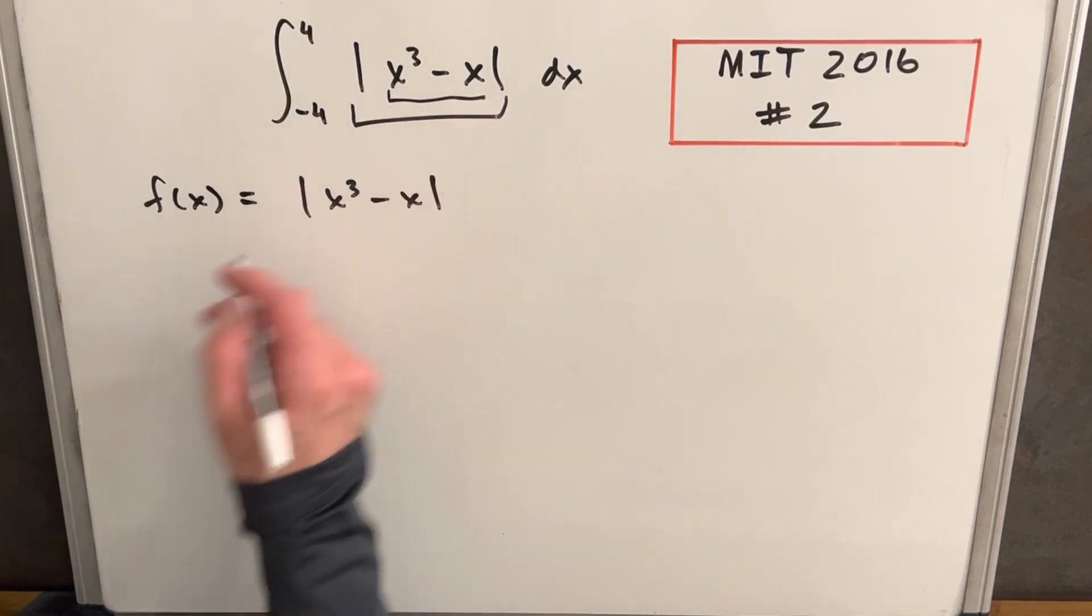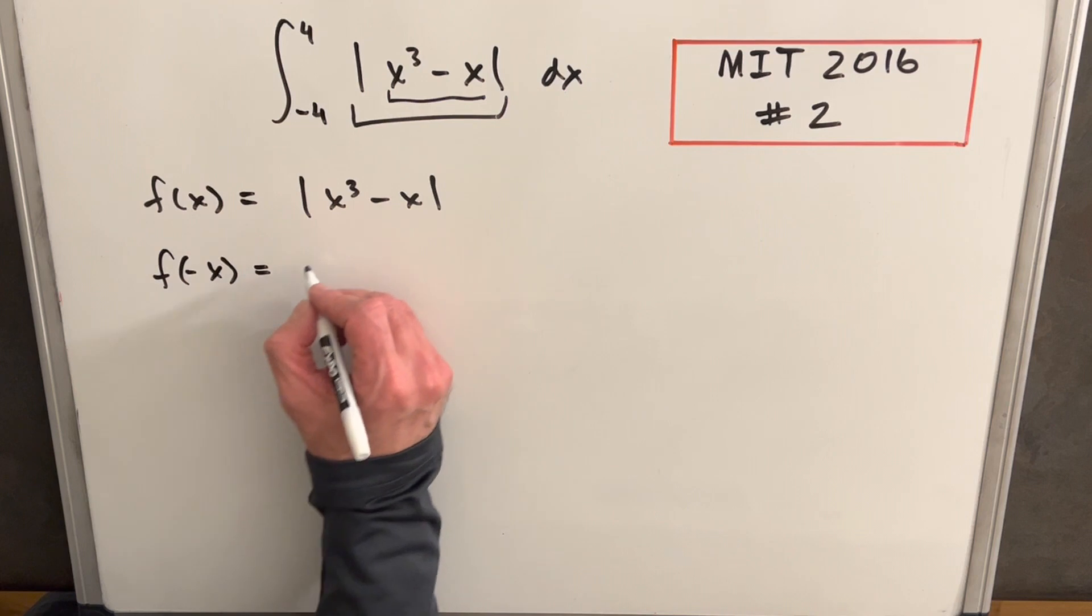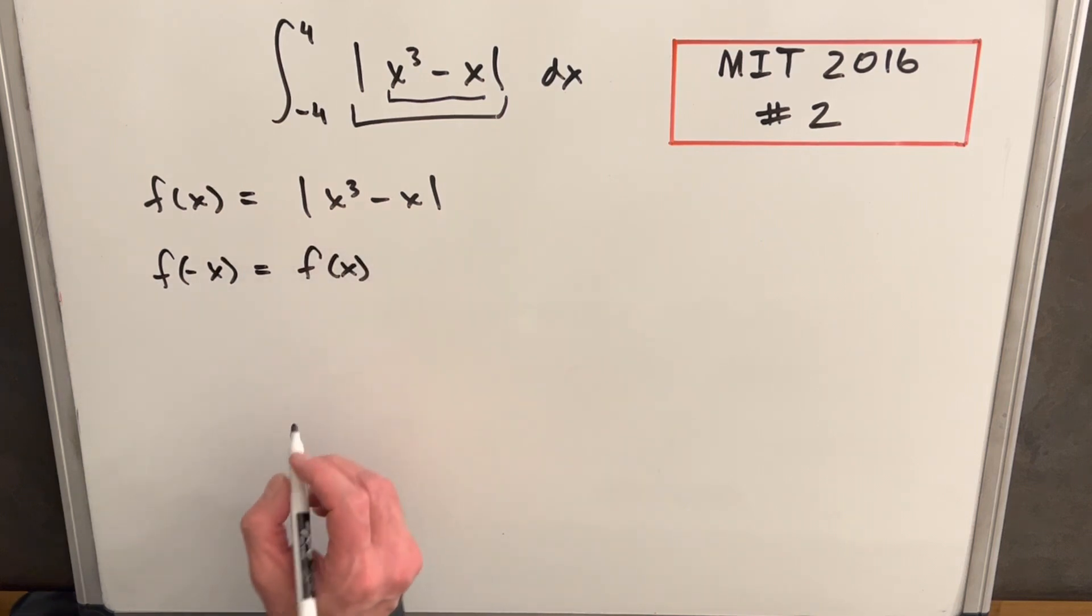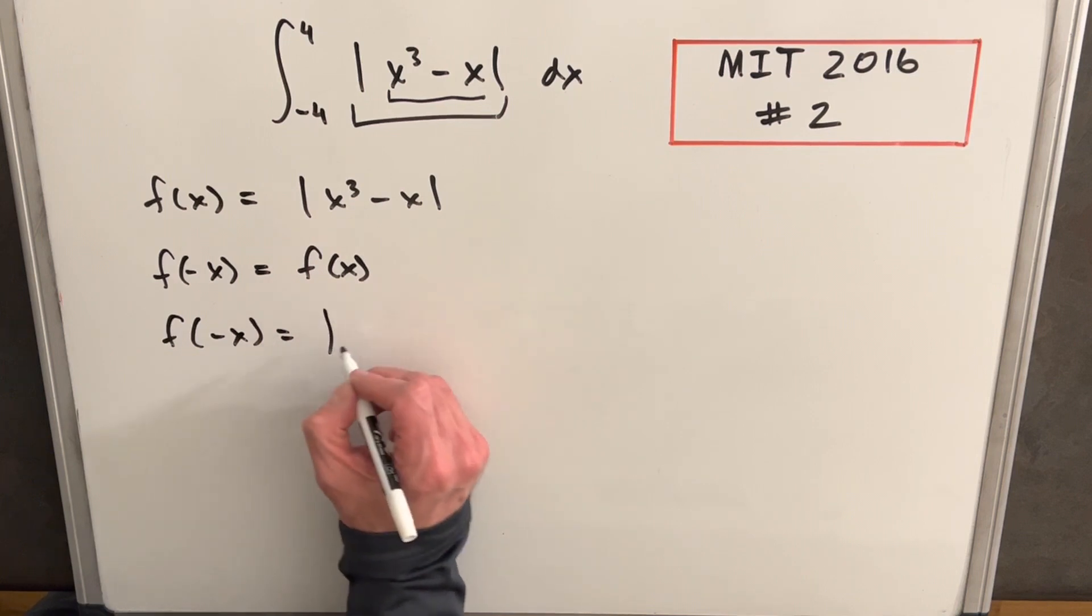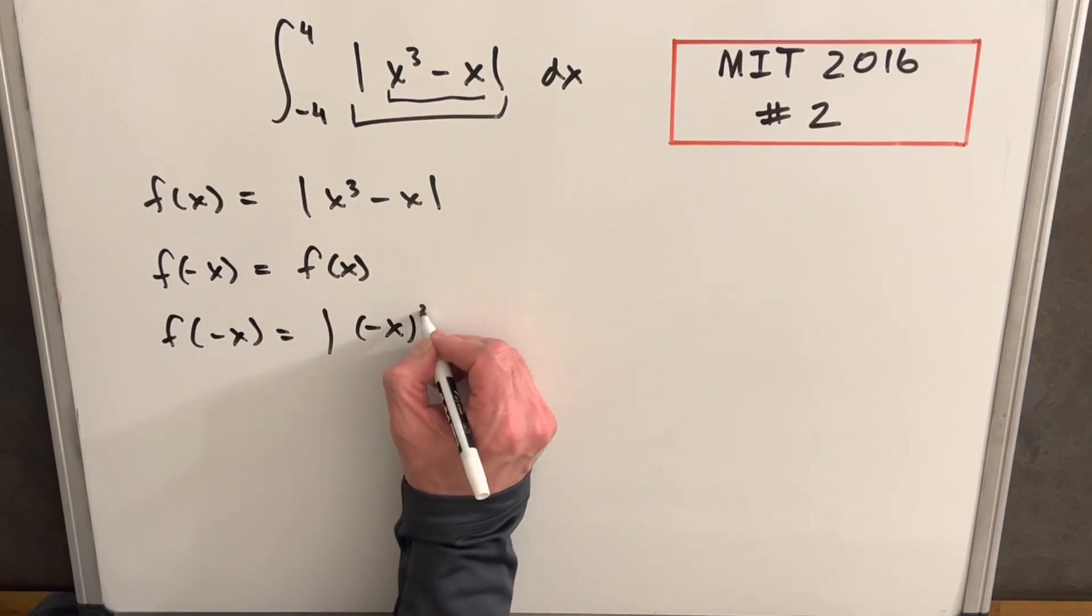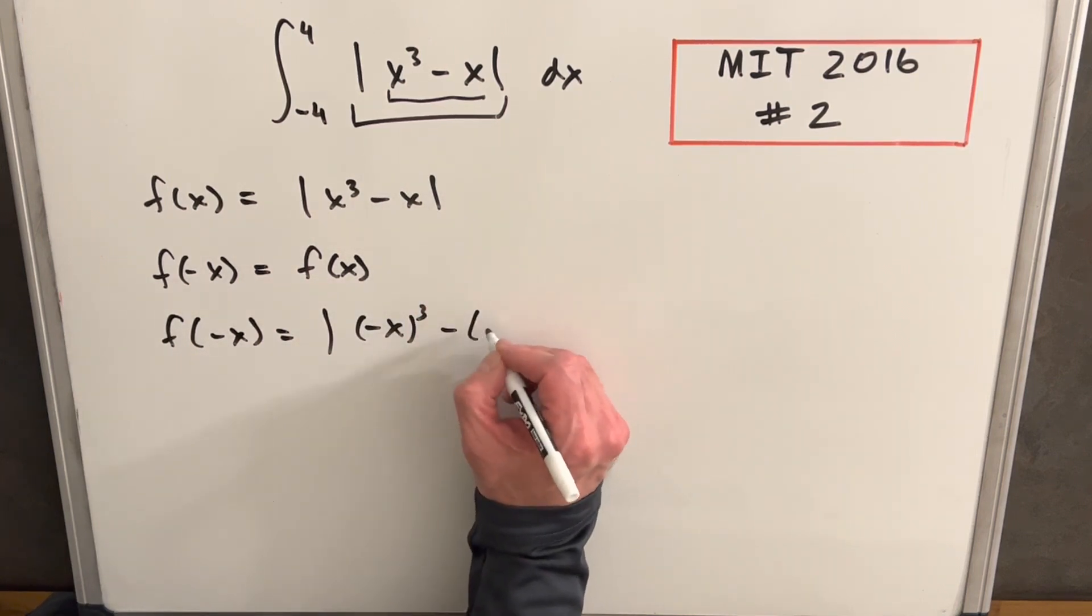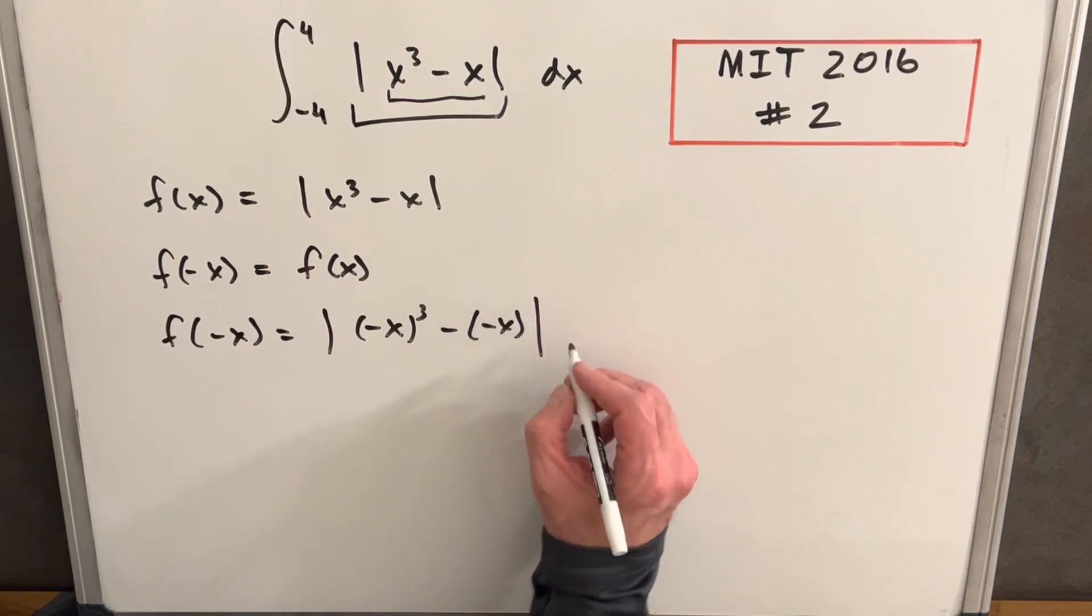So we start with our function f(x), which is the whole integrand, and what we want to show is that if we have f of minus x, it's the same thing as f of x. So what we'll do is evaluate our f of minus x just by plugging in the minus x into our original function here, and then simplifying it.